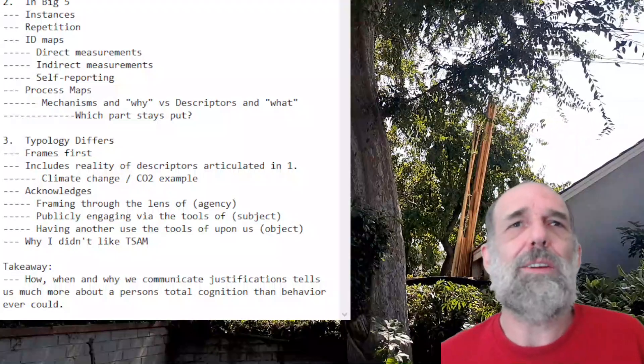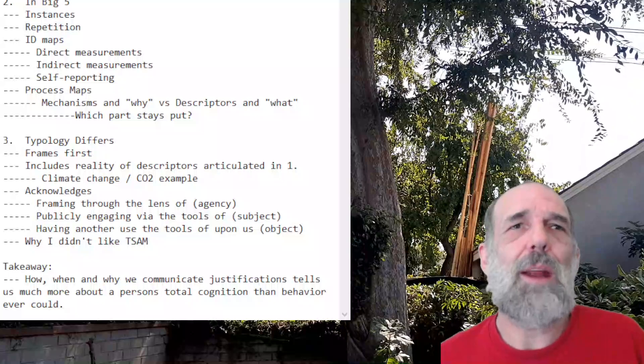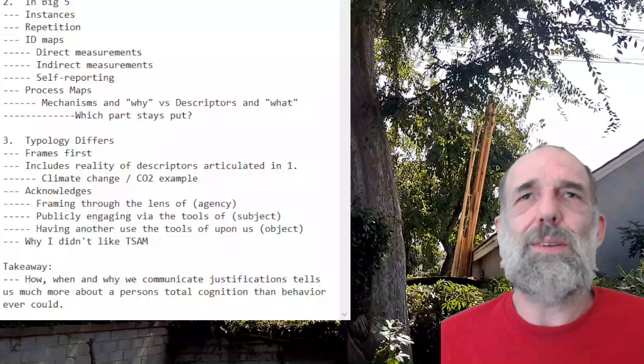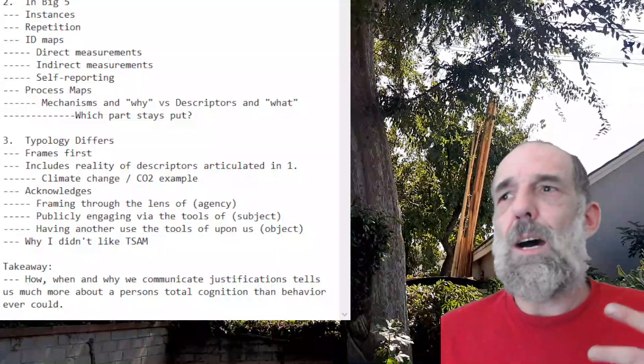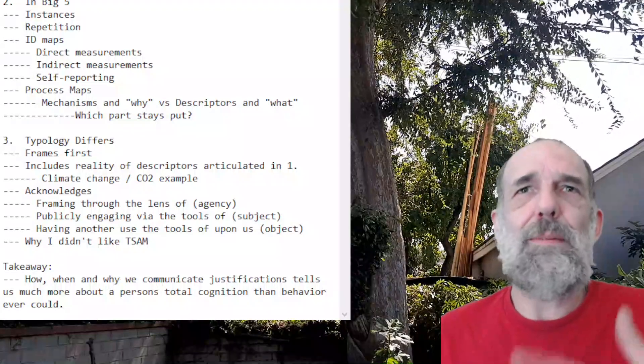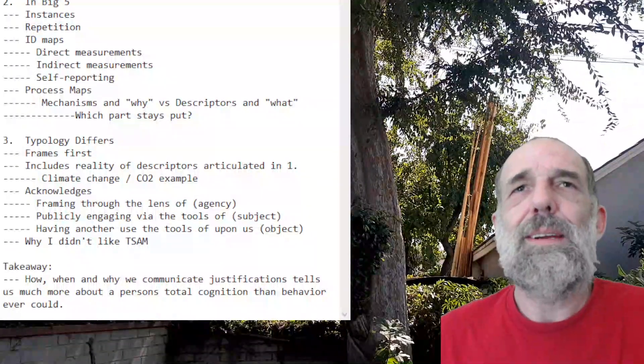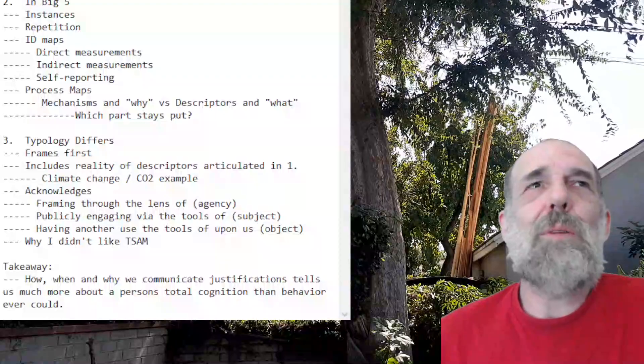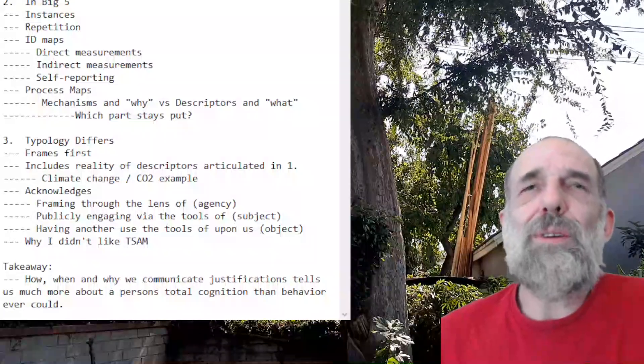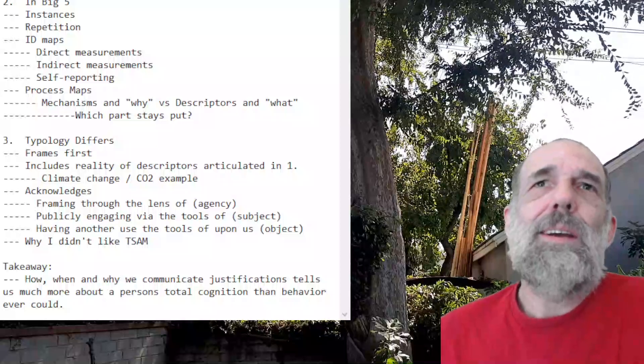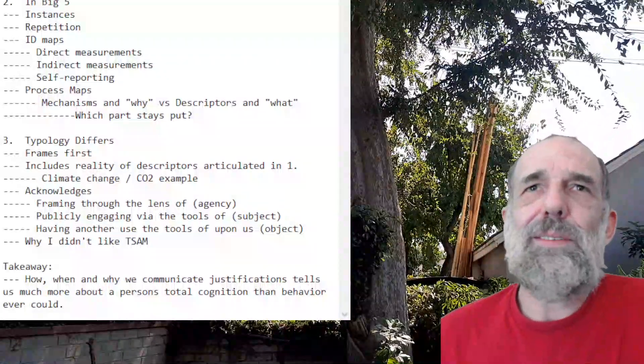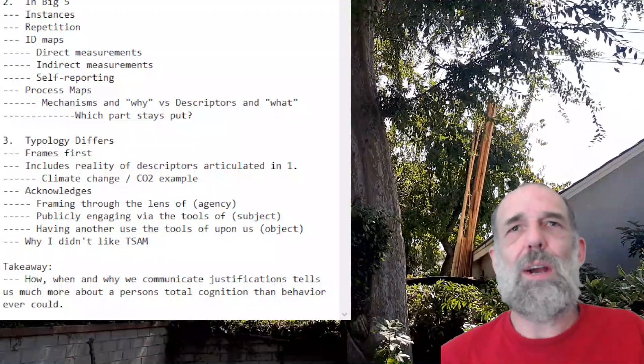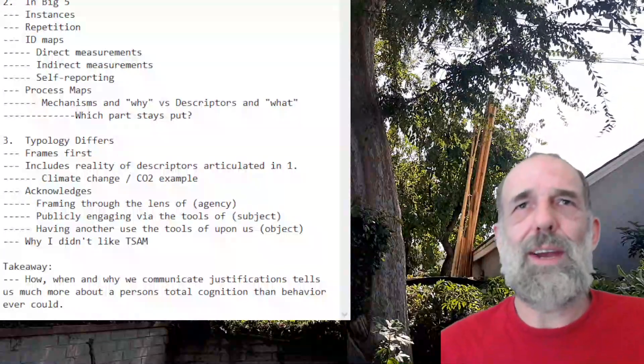Takeaway. How, when, and why we communicate our justifications tells us much more about a person's total cognition than behavior ever could. So, when I'm typing somebody, I might start with a question like, do you eat regularly three meals a day? And they might go, yep, right on point, three meals a day. But it's critical that I ask why. If their answer is, well, because mom always puts food in front of me, it's a very different conclusion than if the answer is because I prep out my meals in advance every night before. One's indicative of strong SI and one's not.